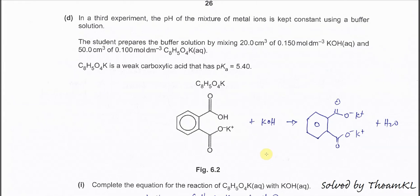Part D. In the third experiment, the pH of the mixture of metal ions is kept constant using buffer solution. The student prepares the buffer solution by mixing 20 cm³ of 0.15 mol per dm³ of C8H5O4K. This structure has one carboxylic acid group. It will react with the KOH and form this salt. This one is the acid, and this is the salt that forms. Remember, this is a very important concept. The acid forms the salt now, and the pKa is given as 5.4. From here we can get the Ka later.